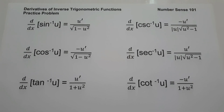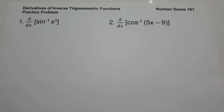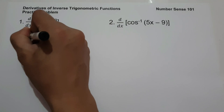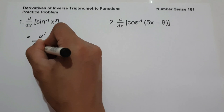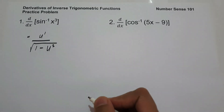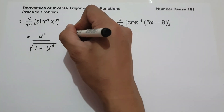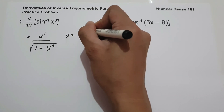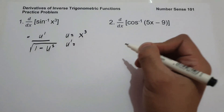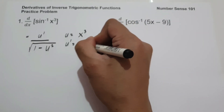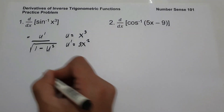So let's start and let's have an example. On number 1, what is the derivative of arc sine x cubed? The derivative of arc sine is u' over square root of 1 minus u squared. So let's identify the value of u, and that's x cubed. And then u', that is the derivative of x cubed, and that is 3x squared.